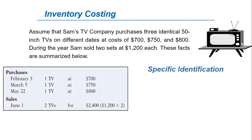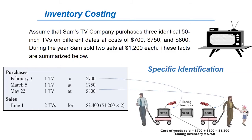During the year, Sam sold two sets at $1,200 each. These facts are summarized in the table below, with purchases on February 3rd, March 5th, and May 22nd, and sales on June 1st. If Sam sold the TVs he purchased specifically on February 3rd and May 22nd, then his cost of goods sold is $700 plus $800, which is $1,500, and the ending inventory is $750 — the TV purchased on March 5th that wasn't sold. As you can see, even with just three items, it's complicated to use the specific identification method.